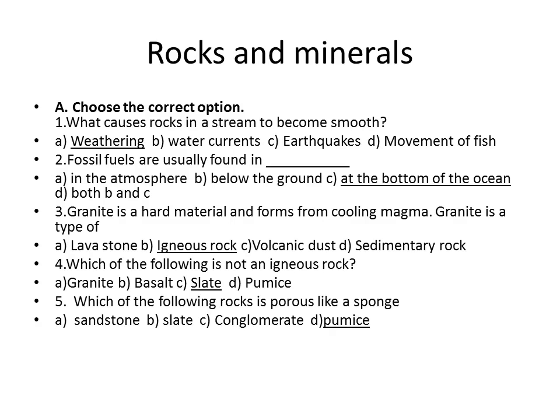Question one: what causes rocks in a stream to become smooth? Among all four options, which converts rock to become smooth? It is called the weathering process. Underline option A: weathering.